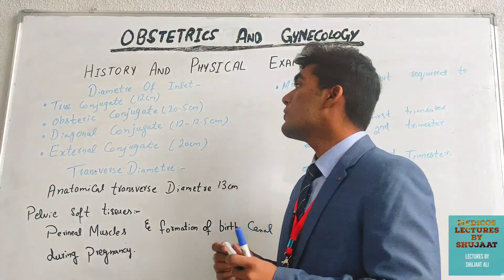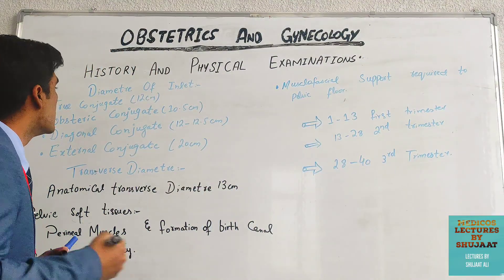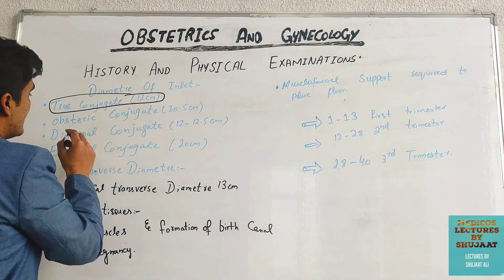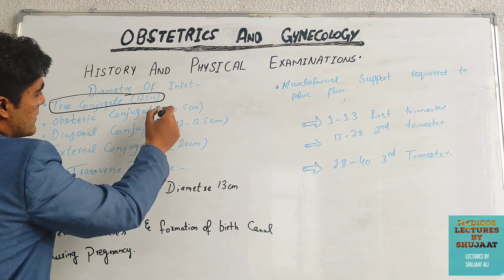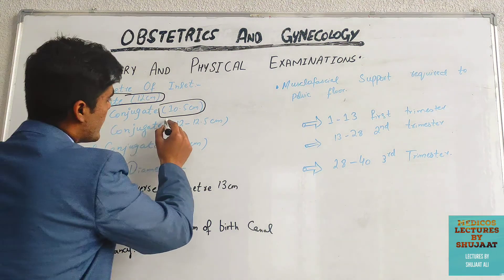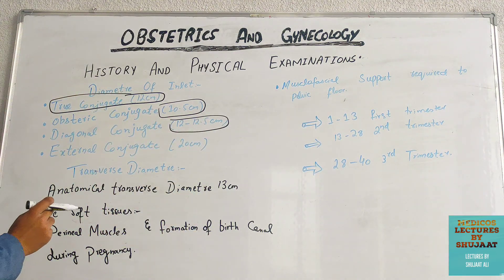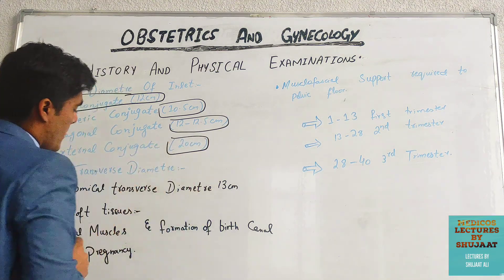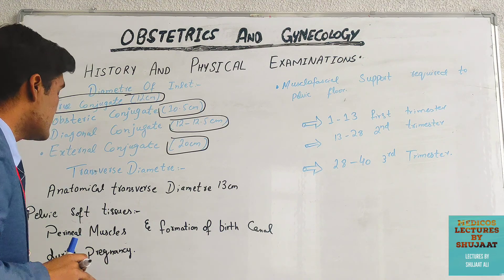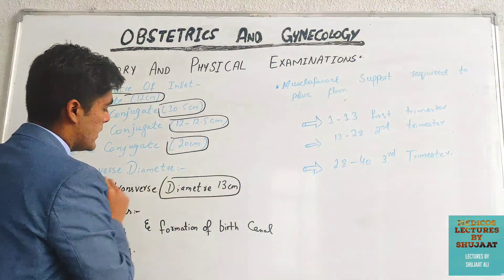The diameter of the pelvic inlet has several types: the first is the true conjugate diameter at about 12 centimeters, the second is the obstetric conjugate diameter at 10.5 centimeters, the third is the diagonal conjugate diameter at about 12 to 12.5 centimeters, the fourth is the external diameter at 20 centimeters, and there is also the anatomical transverse diameter at 13 centimeters.